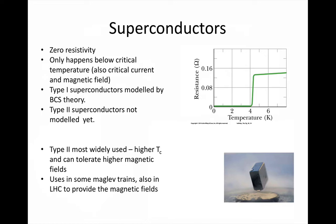Now, very briefly, to superconductors, which really do have a resistivity of zero. Currents have been created in superconducting rings that have circulated for years without measurable loss. In 1911, a Dutch researcher looking at how the resistance of metals changed at very low temperatures found that in some metals, below a particular temperature — which became known as the critical temperature — the resistance would drop to zero. The graph at the top right shows mercury at about 4 Kelvin, or minus 269 degrees centigrade.